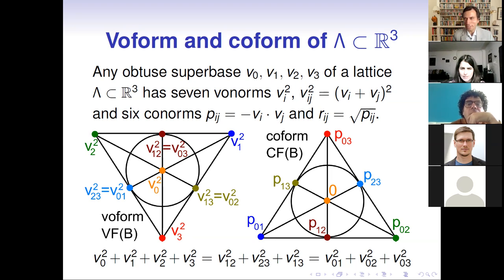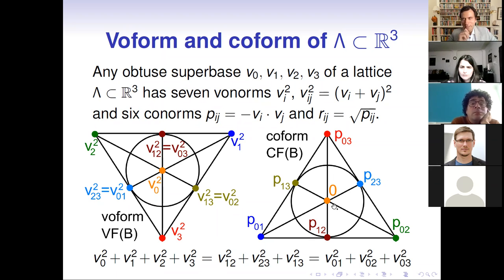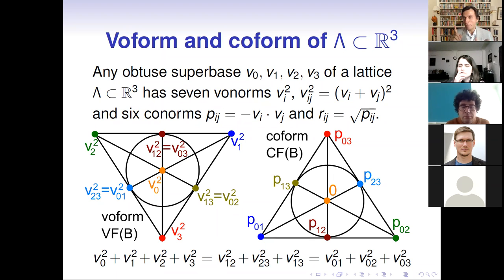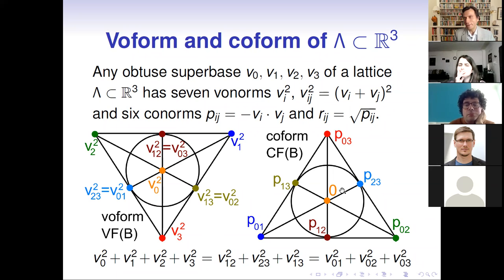The zero in the co-form arises because we have seven vo-norms with one linear relation, which are equivalent to six free numbers. This bijection explains why there is a zero: it is essentially the difference corresponding to that linear relation. One can compute vo-norms from co-norms and vice versa. In the three-dimensional case the co-form is a 2×3 matrix of six co-norms, which is more convenient than the 7-entry wo-form.